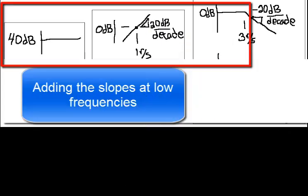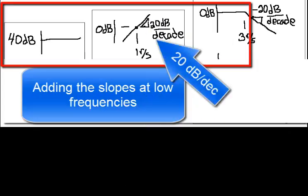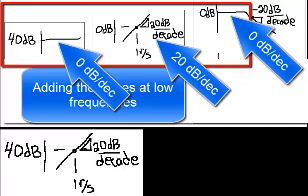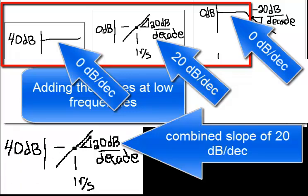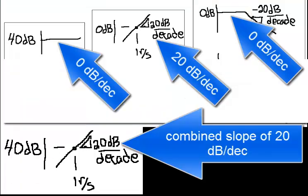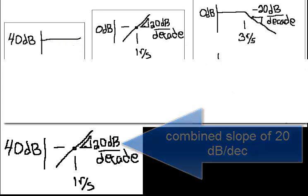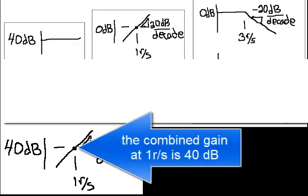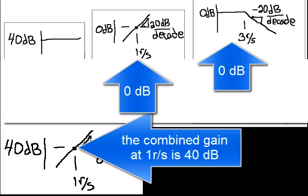Adding the slopes at low frequencies, 20 and 0 and 0, gives a combined slope of 20 dB per decade. The combined gain at 1 radian per second is 40, which is 40 plus 0 plus 0.